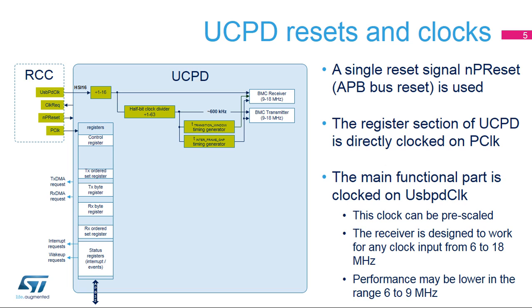The Reset and Clock Controller (RCC) unit is in charge of resetting the UCPD unit by asserting the NP reset signal. It provides the following reference clocks: P-Clock, which is the APB clock used to access memory-mapped registers, and USB-PD clock, which is the main functional clock. USB-PD clock can be pre-scaled to obtain the half-bit clock required by the BIPHASE MARK coding. Note that for the timings T-transition window and T-inter-frame gap, clock frequency uncertainty should be taken into account. The UCPD module asserts a clock request to the RCC to exit a clock-gating low-power state.